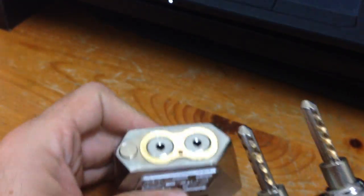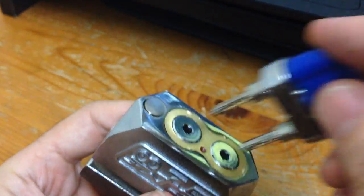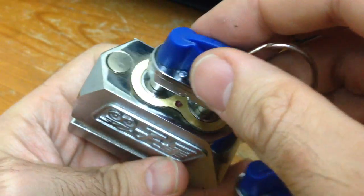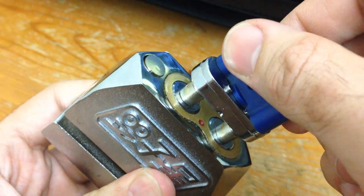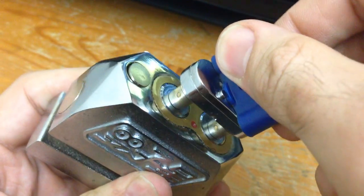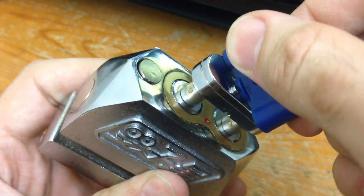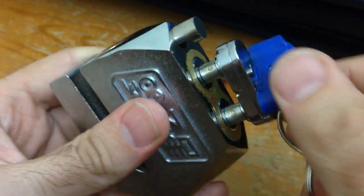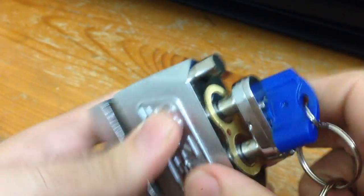This thing is just too crazy because it uses both keys at the same time. So if you look, if I turn this, both cylinders will turn at the same time to unlock. And it is key retaining - I can't take this out until I push down this bar.